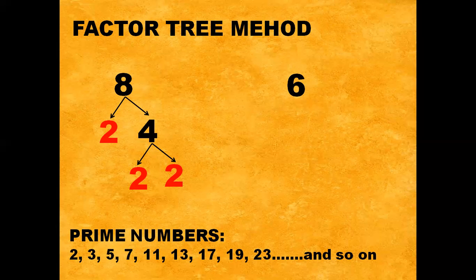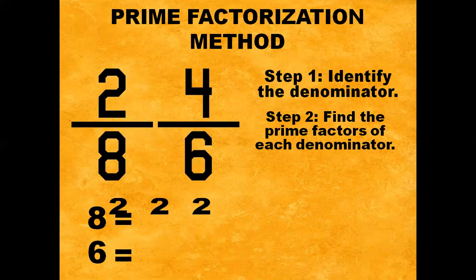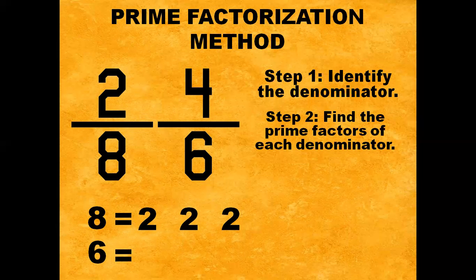How about six? What two numbers multiply to give a product of six? We get six by multiplying two times three. Both two and three are prime numbers. So the prime factors for six are two times three. The prime factors for eight are two times two times two, and the prime factors for six are two times three.